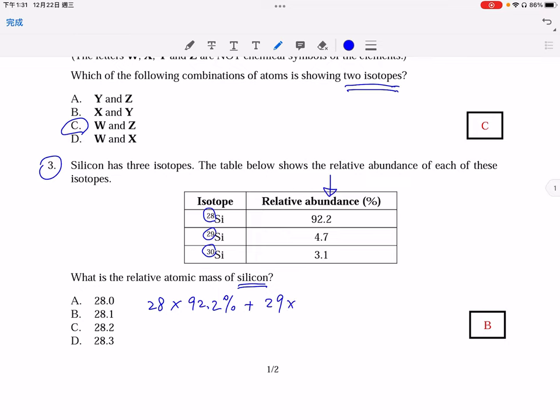And then finally, the last isotope with mass number 30, 3.1%. Of course, I do notice that some students might have difficulty in the calculation.